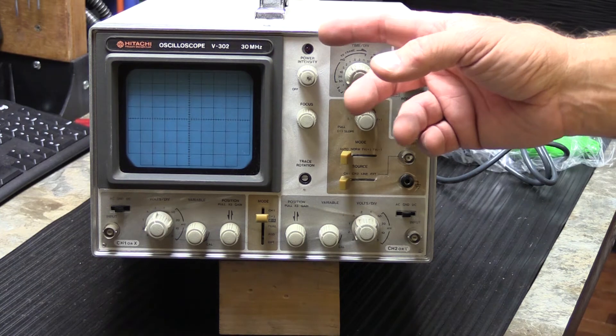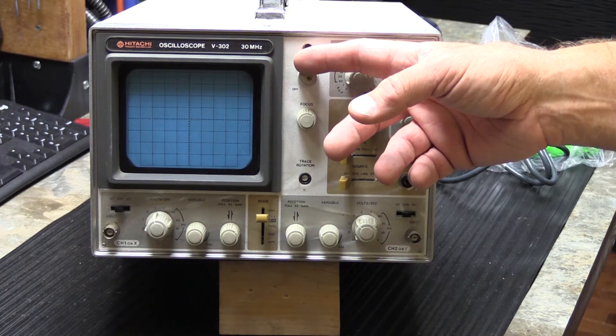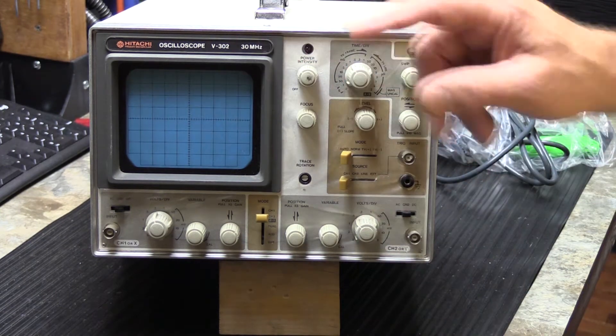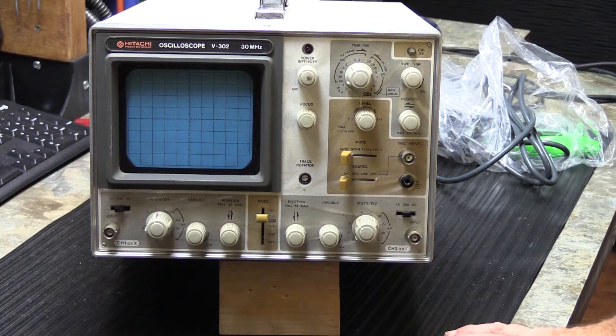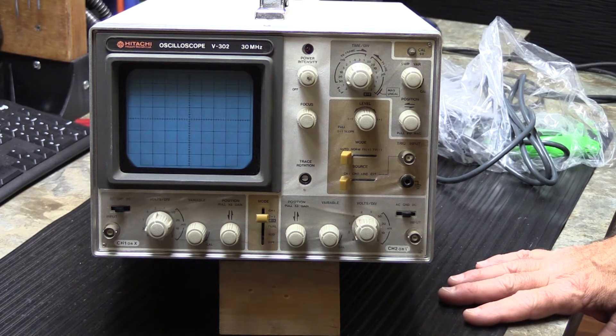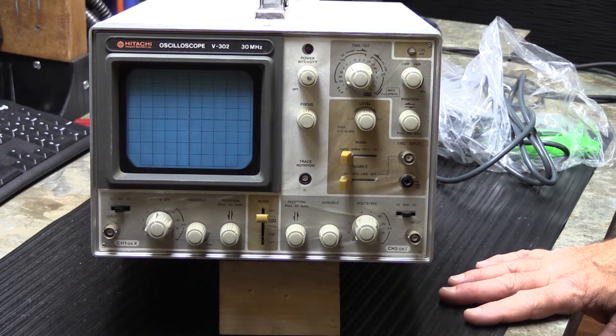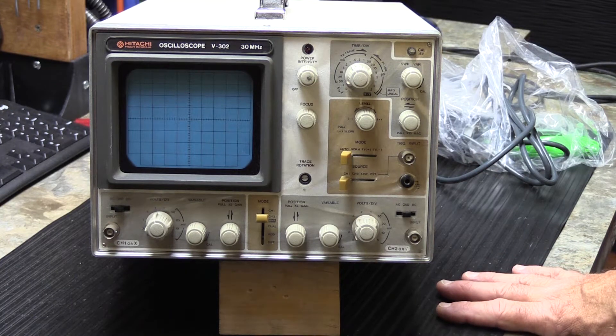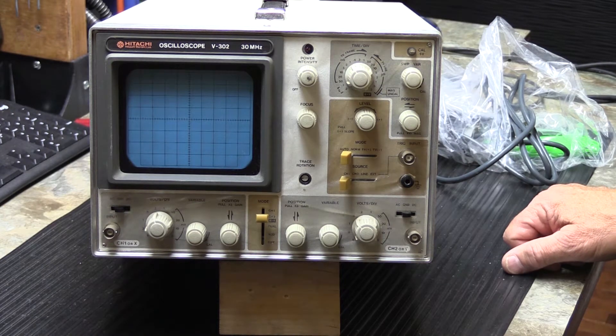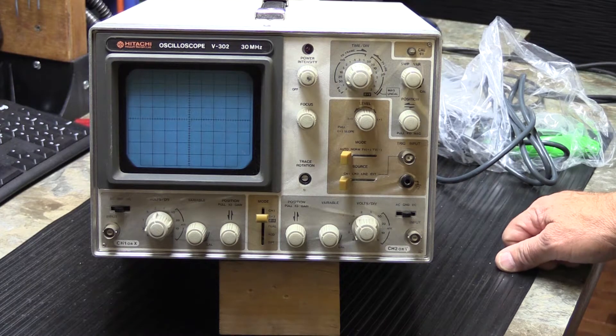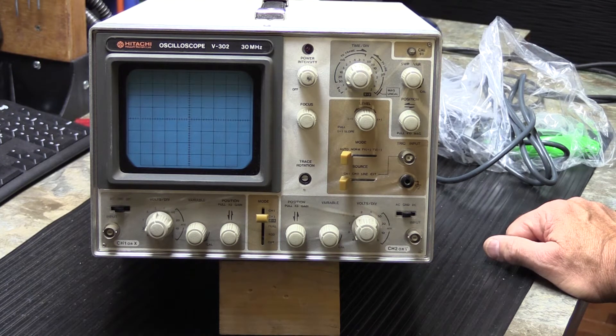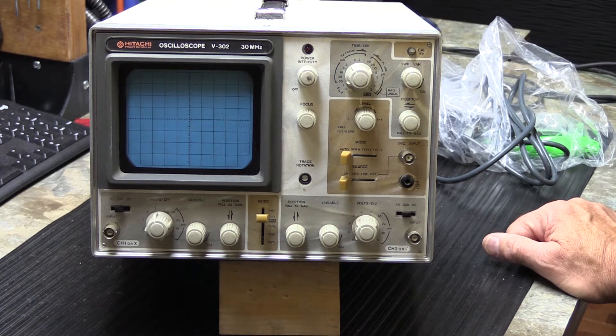This is a Hitachi model V302 30 megahertz oscilloscope. And this is an old-fashioned oscilloscope. It's not a digital oscilloscope. It's an old analog oscilloscope. And actually, it's the same exact series of Hitachi oscilloscope as the very first one I ever bought. That was many, many decades ago.